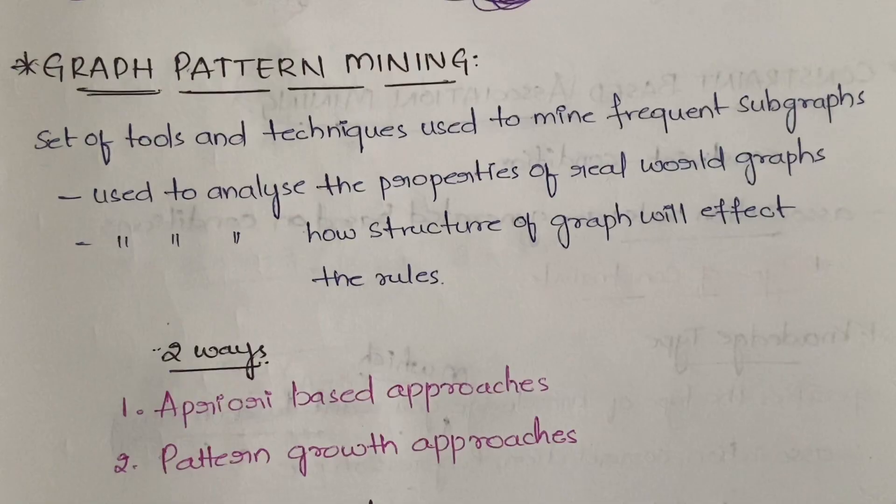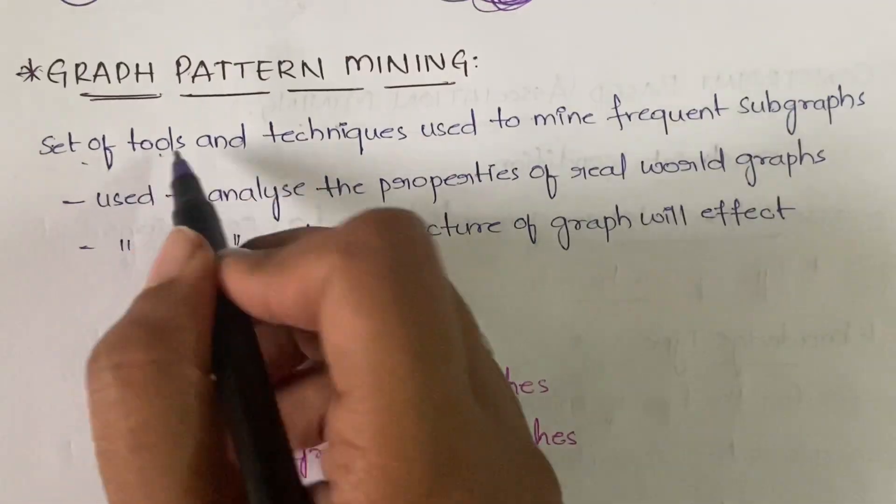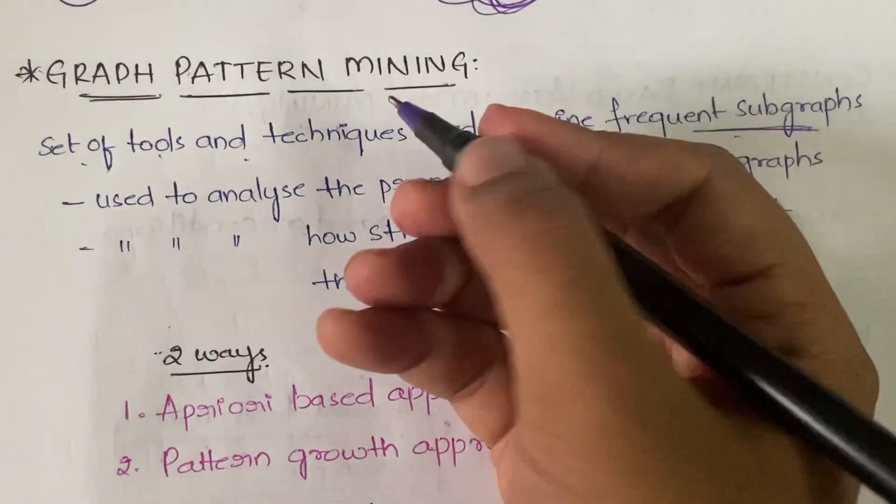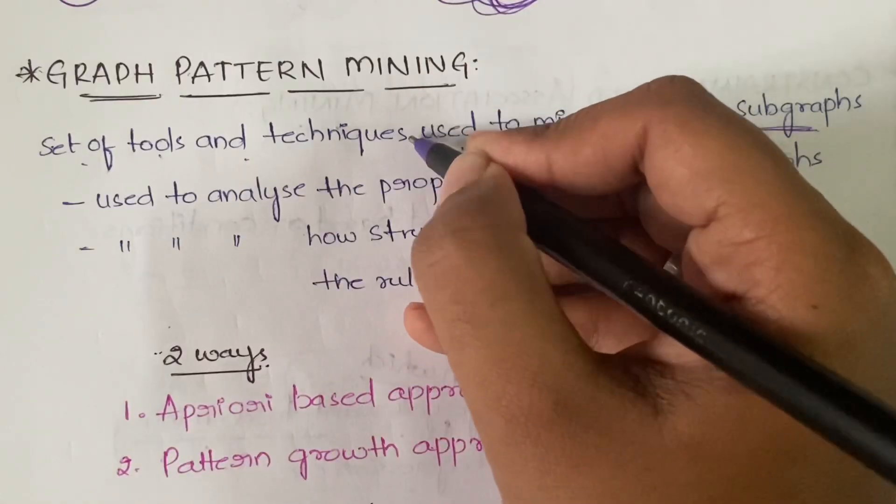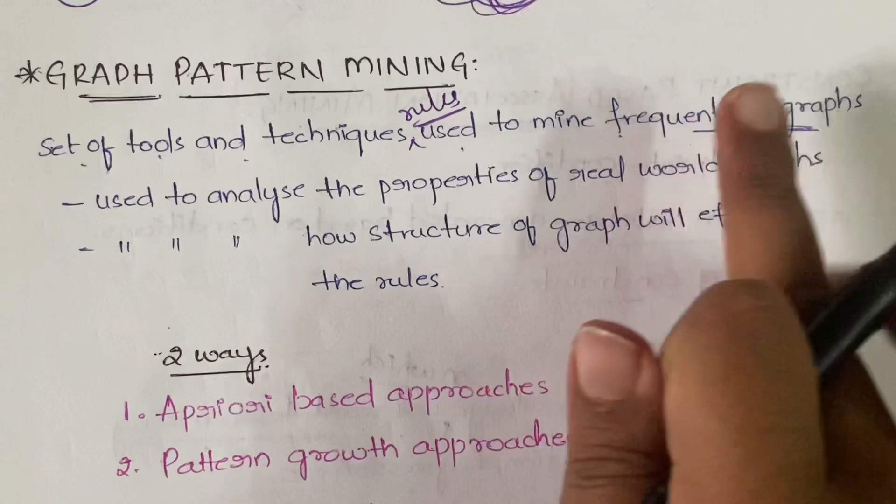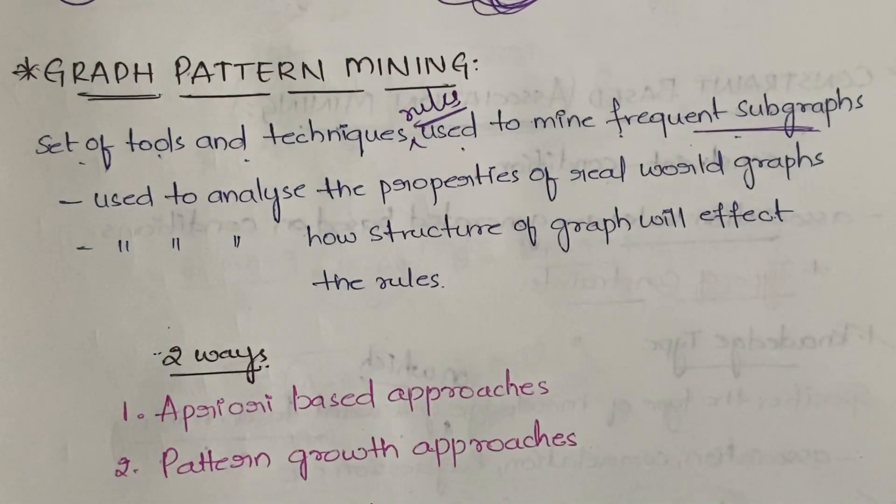So let's see what is graph pattern mining in the subject of data mining. Graph pattern mining is a set of tools and techniques which are used to mine frequent subgraphs - or you can say set of tools, techniques, and also rules which are used to mine frequent subgraphs.